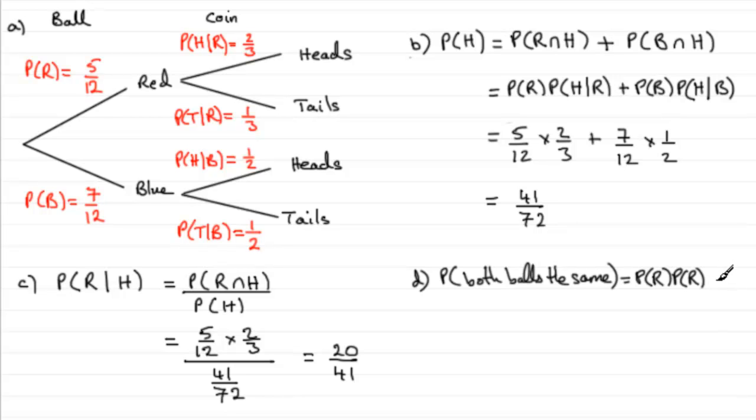And then you've got a mutually exclusive event, or they could both pick blue balls. So probability of blue times probability of blue.